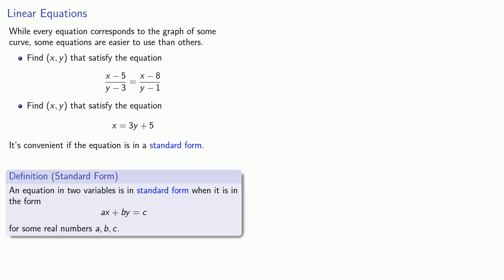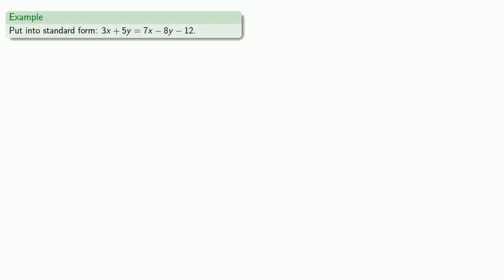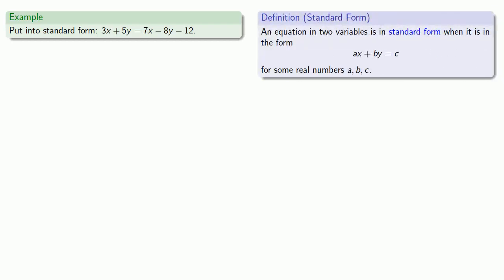Here the thing to notice is that all of our x and y terms are over on the left-hand side, and we have a number over on the right-hand side. So let's try to put this equation in standard form. Again, the thing to notice is that standard form consists of having all of our variables on one side.